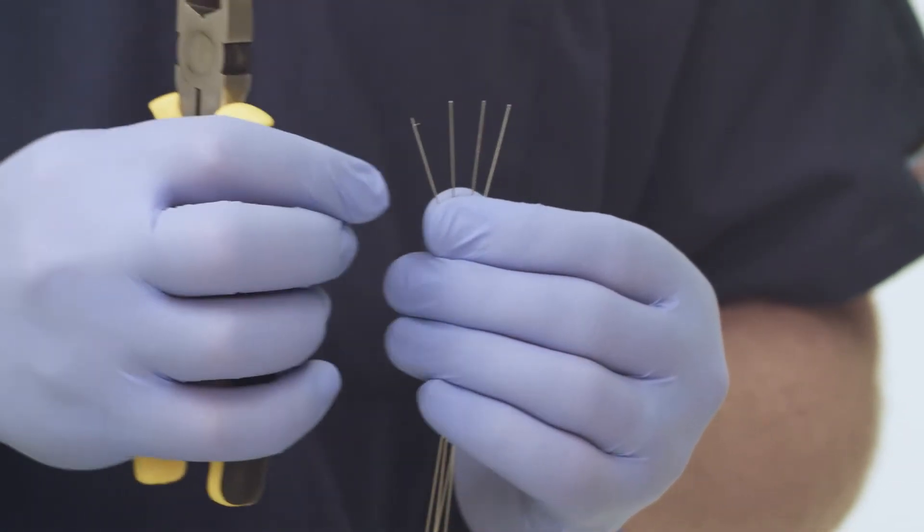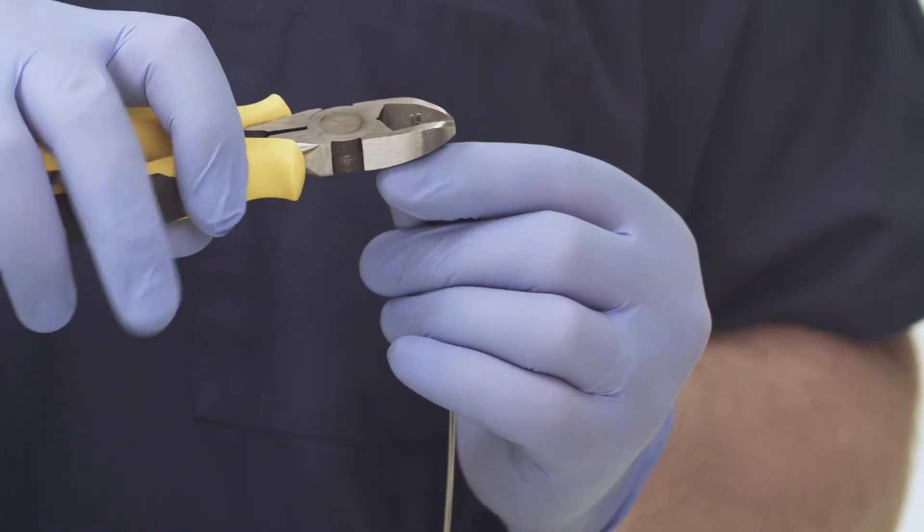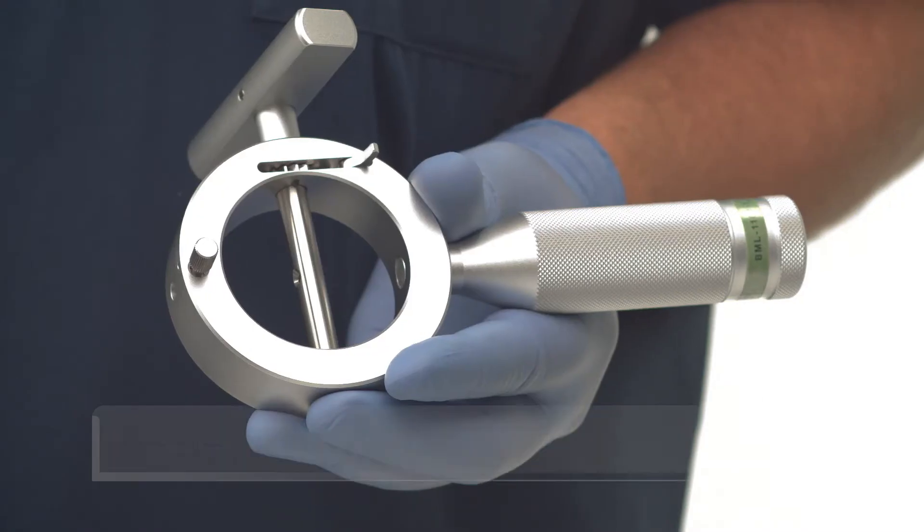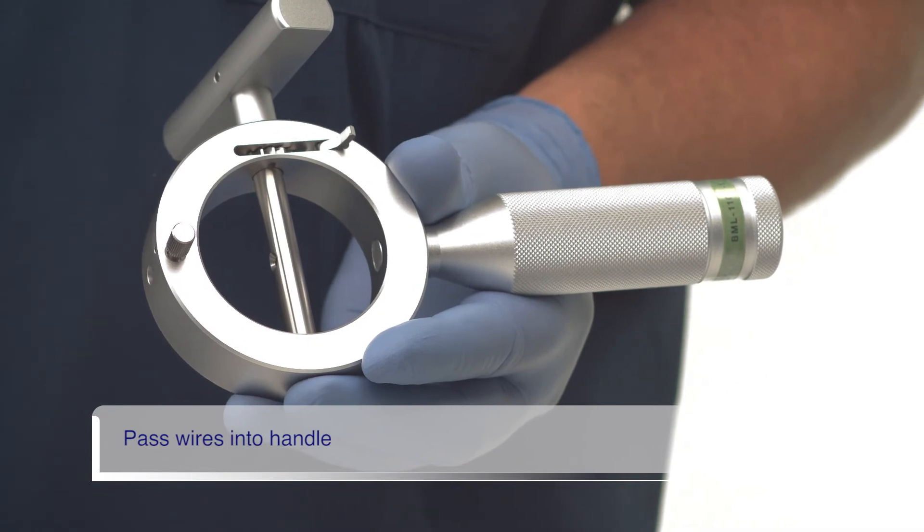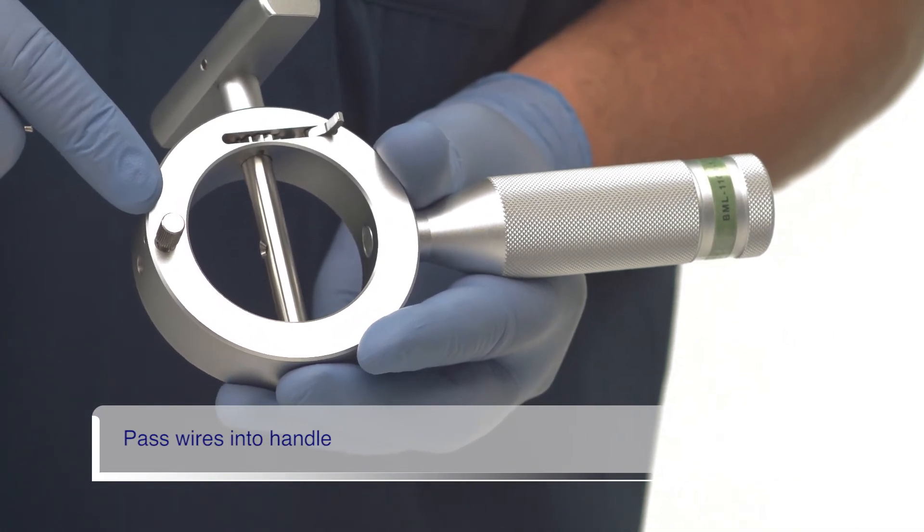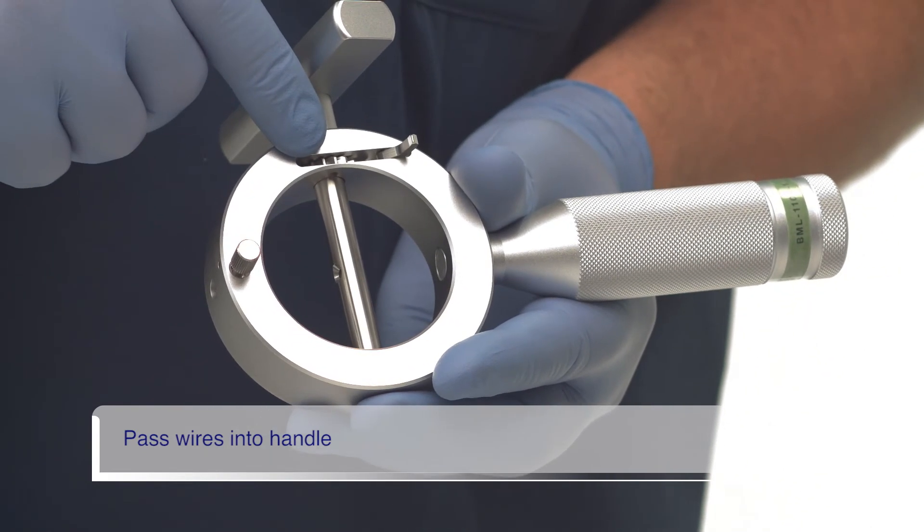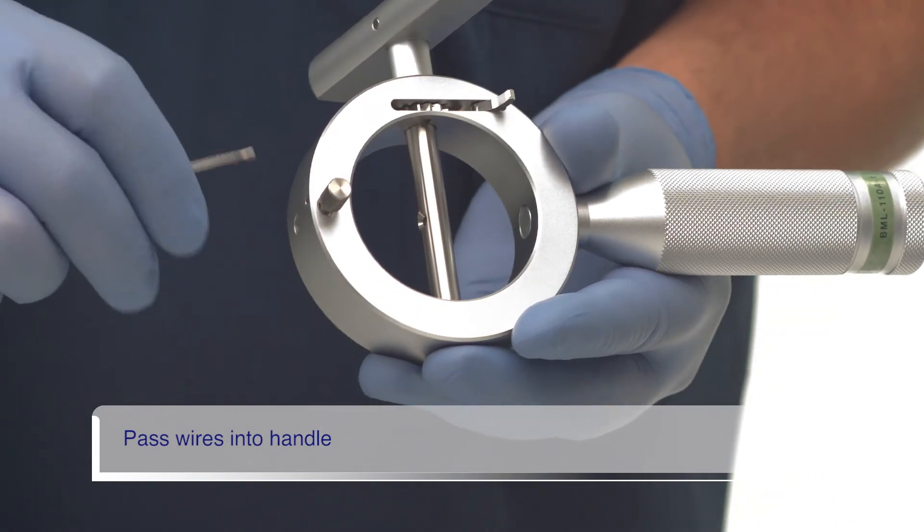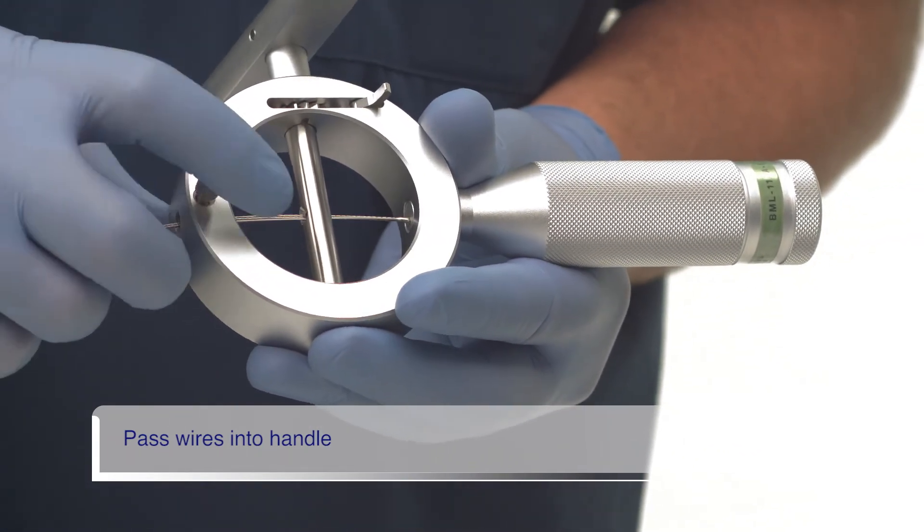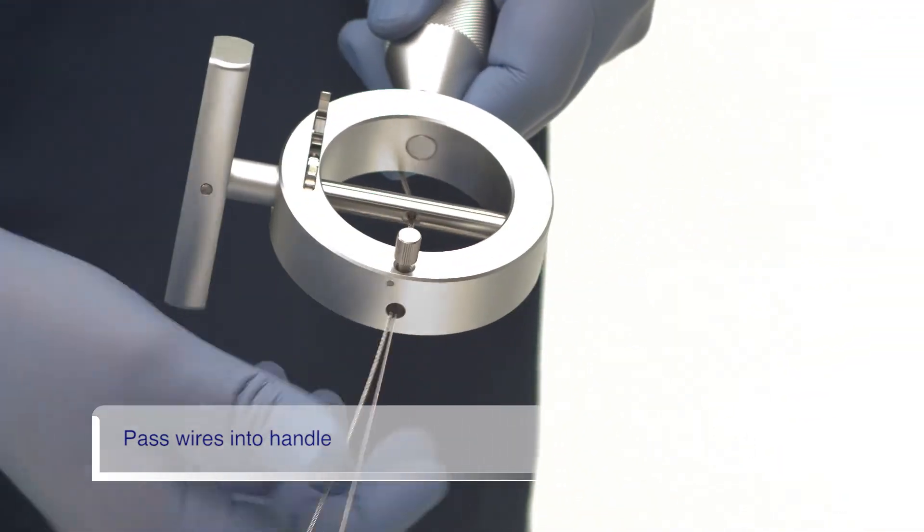If any wire ends have become frayed, trim them with the wire cutters. We will now load the wires into the emergency lithotriptor handle. Note that the emergency handle has two locks. One is a thumb screw that secures the coil sheath and the second is the ratchet lock which we tested earlier. The wires are passed through the hole at the top of the handle and through the hole at the center of the T-piece.